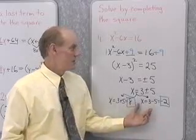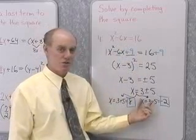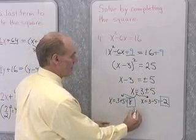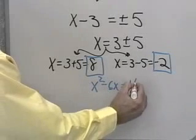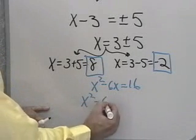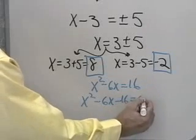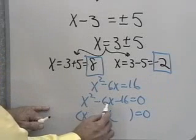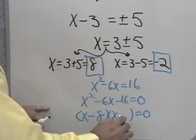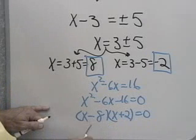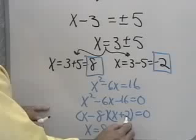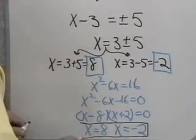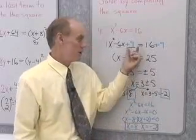Now, what I want to show you is that I could have solved this original equation by factoring and get these same two solutions, just to convince you that this method works. So I'm going to solve x squared minus 6x equals 16 again. To solve by factoring, I put it in standard form by adding negative 16 to both sides. x squared minus 6x minus 16 factors into x minus 8 times x plus 2. Set x minus 8 equal to 0, and I get x equal 8. Set x plus 2 equal to 0, and I get x equal negative 2 — the same two solutions from completing the square.